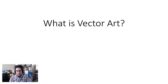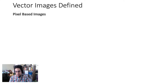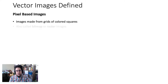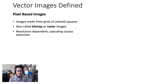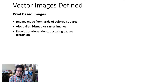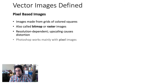However, they're quite different from pixel-based images. Pixel-based images are images made from grids of colored squares. They're also called bitmap or raster images. These kinds of digital images are resolution dependent, and among other things, that means enlarging or upscaling them can sometimes cause distortion, since there's a finite amount of pixel information in each image. Photoshop works mainly with pixel-based images.